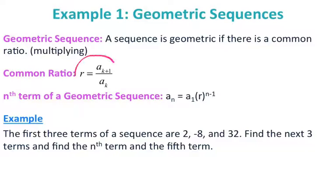The thing you're multiplying by is called the common ratio. Here is how you find the common ratio: you take the second term divided by the first term. And there is a formula for the geometric sequence shown here.